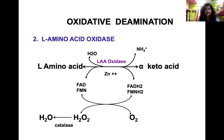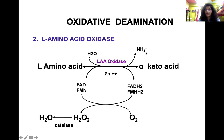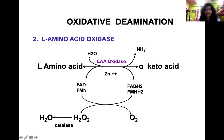The second enzyme for oxidative deamination is amino acid oxidases. L-amino acid oxidases oxidize L-amino acids and convert them to keto acids with liberation of ammonia. L-amino acid oxidases are flavoproteins and zinc-dependent enzymes that can use either FAD or FMN as coenzyme. During oxidation, FAD is converted to FADH2 and FMN to FMNH2.